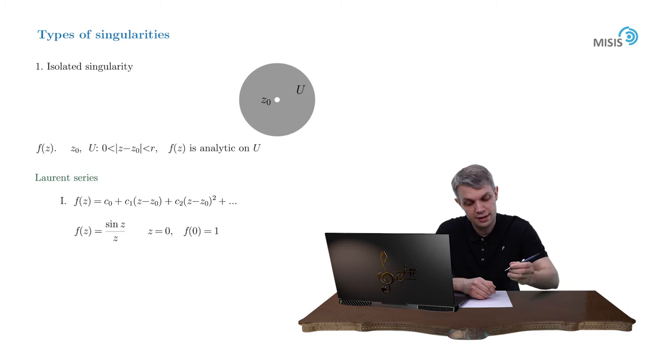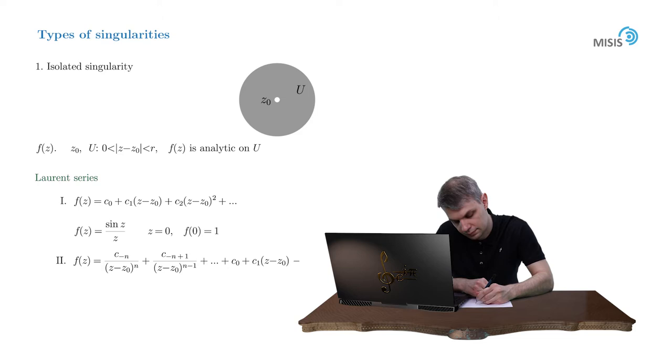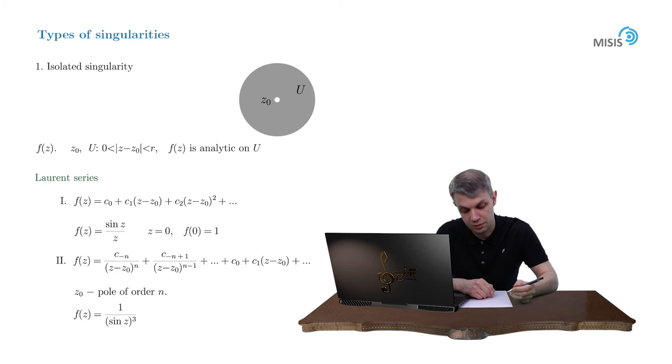The second type of singularities is the case where the Laurent expansion has only finite amount of terms with negative powers. So we write c_{-n}/(z - z0)^n + c_{-n+1}/(z - z0)^{n-1} and so on. In this case point z = z0 is called the pole of order n. The case n = 1 is termed a simple pole. A typical example would be f(z) = 1/sin^3(z), which has a third order pole at z = πn where n is an arbitrary integer.